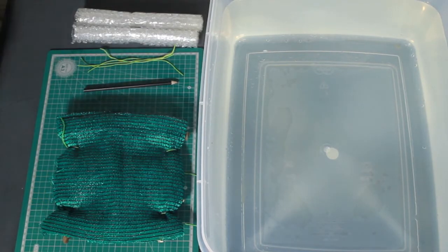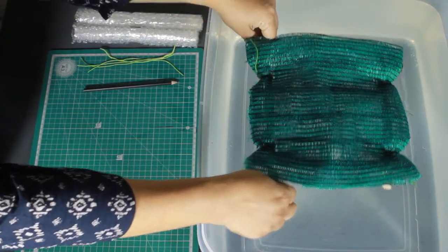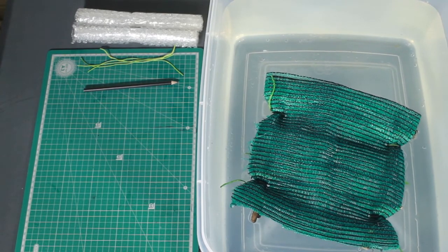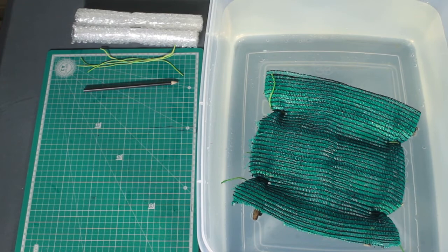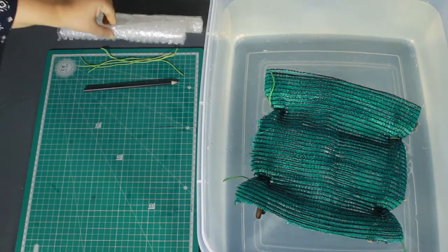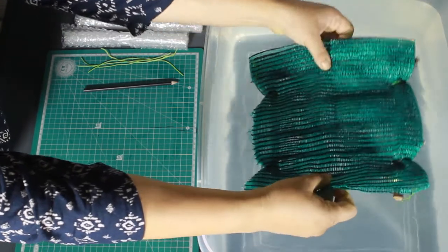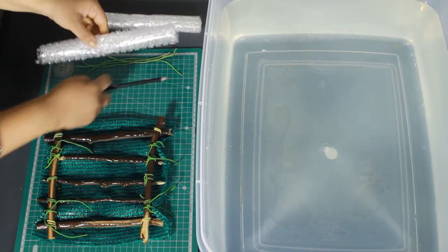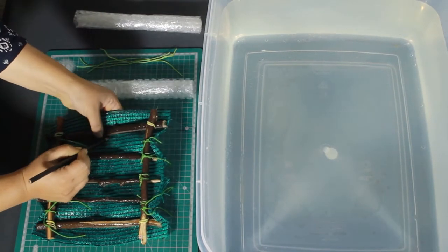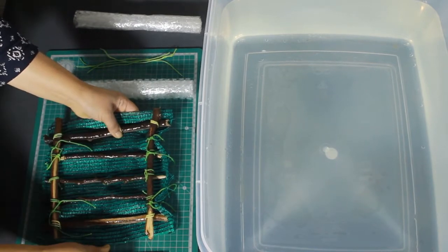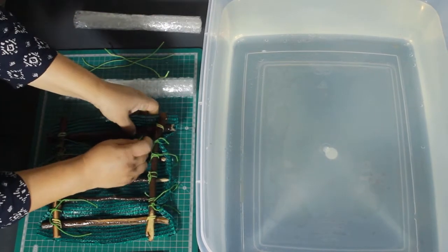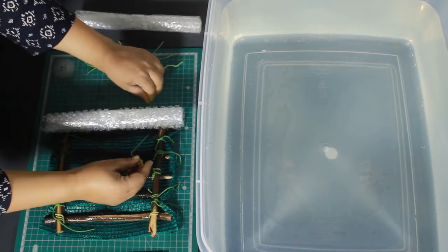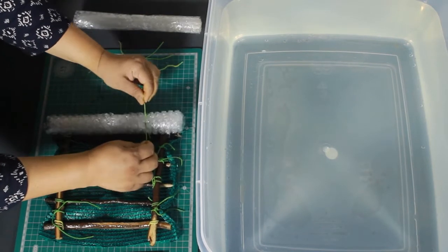Let's test our floating raft on water. Yes, it floats! To make it sturdier, we will add some buoyant materials like the bubble wrap roll that we had made earlier. Keep the bubble wrap on the edge of the twig frame. Take a pencil and poke a hole in the net. Weave a string over the bubble wrap through the net. Secure it by tying a knot. Repeat this on all four sides.